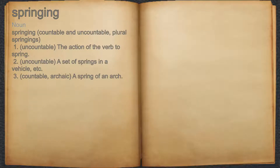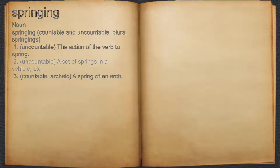Springing. Noun. 1. Uncountable, the action of the verb to spring. 2. Uncountable, a set of springs in a vehicle, etc.